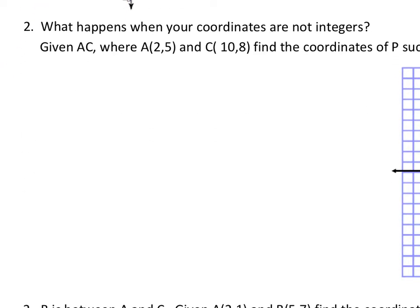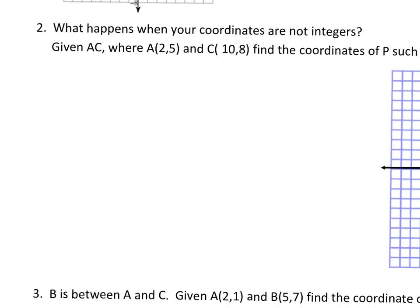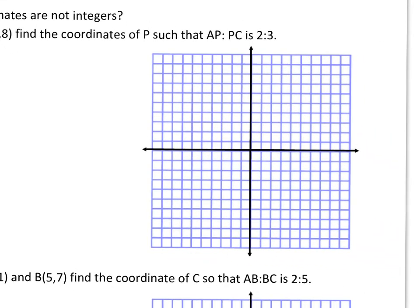Now moving on to number two, where something a little different is going to happen. Go ahead and graph it if you haven't yet. I've got points A and B on the graph, and I want to place point P somewhere between A and B such that the ratio of AP to PB is two to three. Based on this ratio, P is somewhere close to but not exactly in the middle. I'll take a random guess at its location.